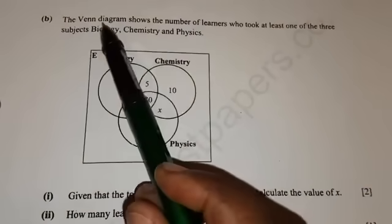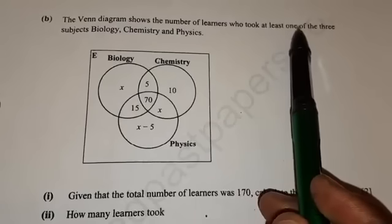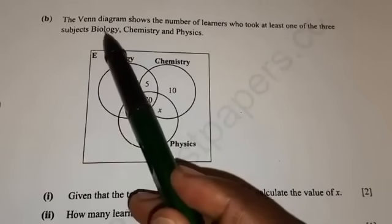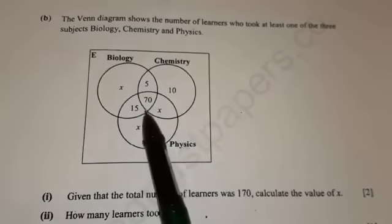The question says the Venn diagram shows the number of learners who took at least one of the three subjects: biology, chemistry, and physics. So this is the Venn diagram.